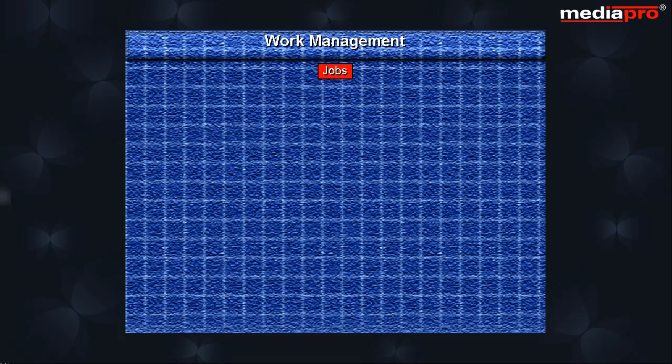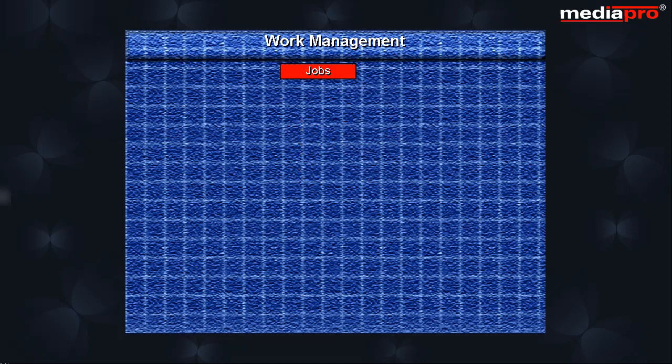A job is defined as an environment that allows work to be done. Once a job has been started, you can ask the system to process work by entering a command, selecting a menu option, or calling a program. All jobs on the AS-400 can be broadly classified as system jobs and user jobs.